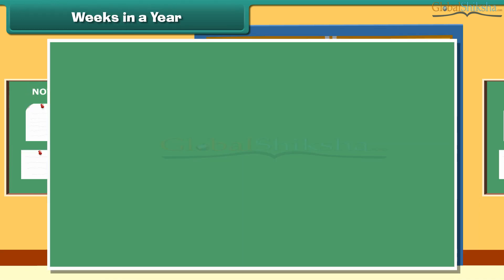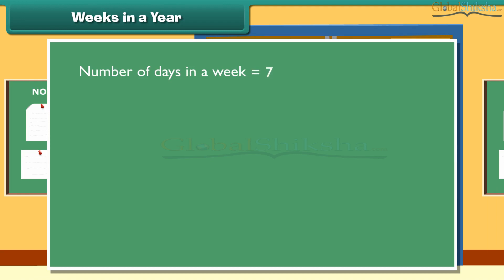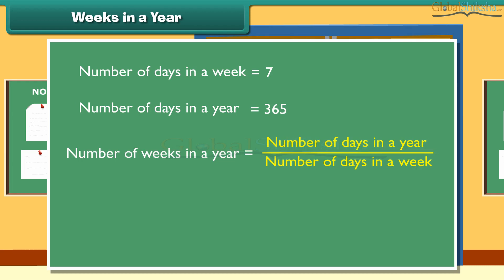Weeks in a year. The number of days in a week is 7. The number of days in a year is 365. The number of weeks in a year equals the number of days in a year divided by the number of days in a week, which is 365 divided by 7, which equals 52 weeks.